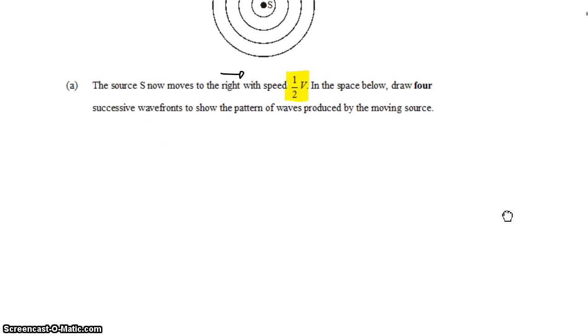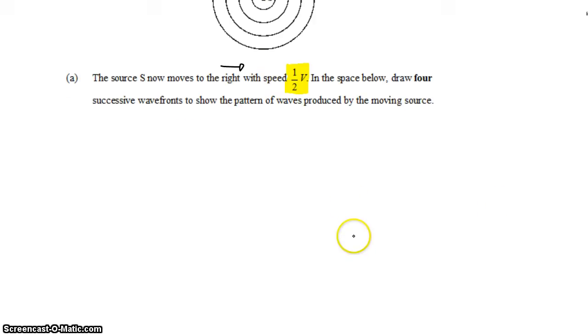I think it's going to be easier to do this in reverse. So I'm going to start with the source at the end of its travel, all the way to the right, and it just emitted a wavefront. Now, if we go into the past, the source was further to the left. Let's go into the past one period. Because the wave source is moving at half the speed of the waves, the wave source would have moved half as far as the wave did. Let me see about maybe enlarging this so I can get a little more room to work with.